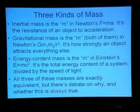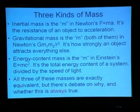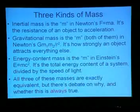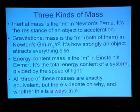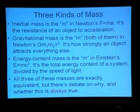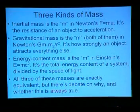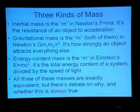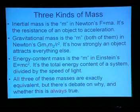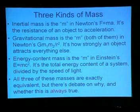One thing that even a lot of physicists don't notice unless they've researched the topic: there are actually three kinds, three fundamental definitions of mass. Inertial mass — that's the m in Newton's famous F equals mA equation. It's the resistance of an object to acceleration, and it's the original quantity that got called mass.